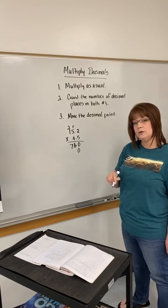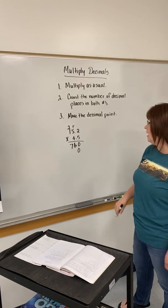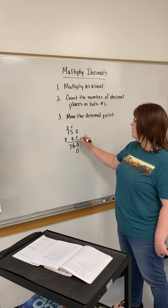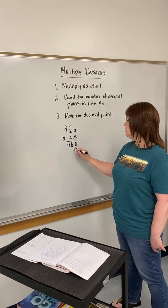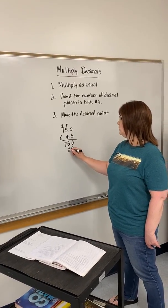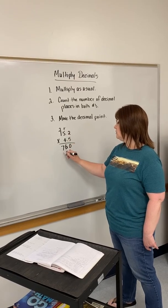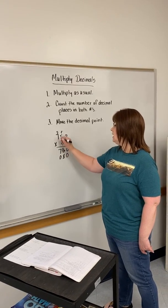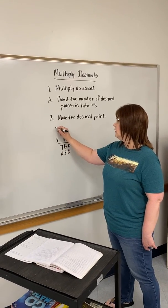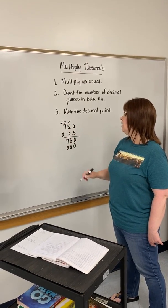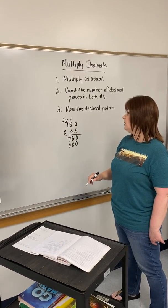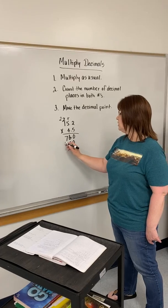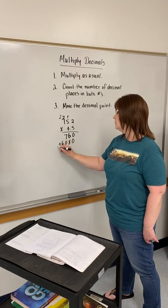Zero placeholder — don't forget that. Then 4 times 2 is 8. 4 times 5 is 20, carry the 2. 4 times 1 is 4, plus 2 is 6.